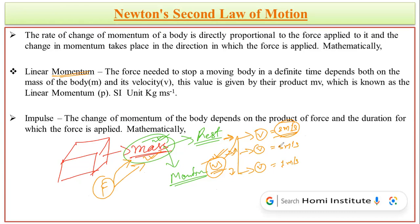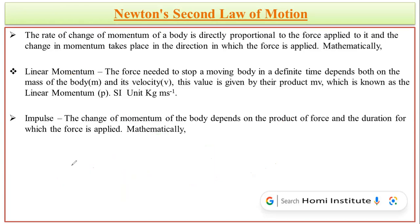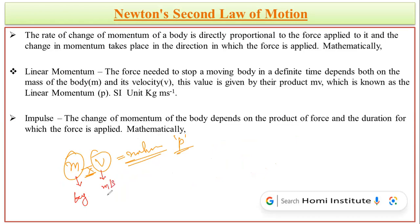Let's discuss momentum again. Basically, momentum is the product of the mass and velocity by which a body is in continuous motion. Whenever a body is in motion, it has two physical quantities: mass and velocity. The product of these two is what we call momentum, represented by the small letter P. Mass has the unit kg and velocity has the unit meters per second, so the unit of momentum is kg·m/s.